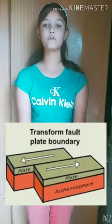Number 3: Transform boundary. A transform boundary occurs when two plates slide past each other — like the movements of my hand. These are two plates; they slide past each other, or one plate may slide under another plate.